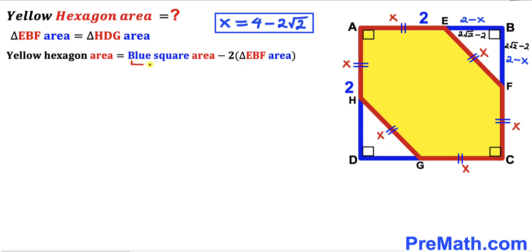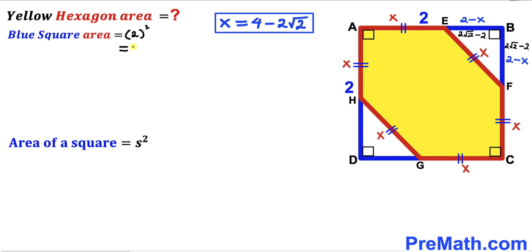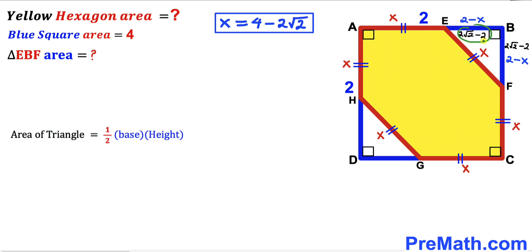Now let's calculate the area of the blue square. Using the formula Area = S², where the side length is 2, the blue square area equals 4. Next, for triangle EBF, we use Area = ½ × base × height. The base is 2√2 minus 2 and the height is also 2√2 minus 2.